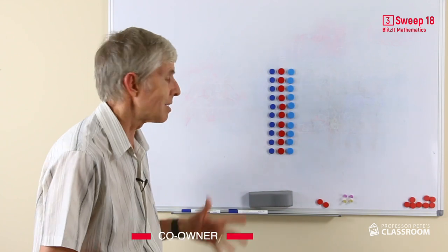Here you are ready to do sweep number 18. Again, a really easy set of number facts. This time we're looking at multiplying by 10 and dividing by 10, all in one sweep because they're so easy.